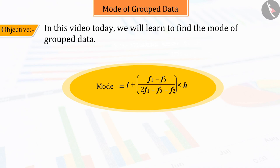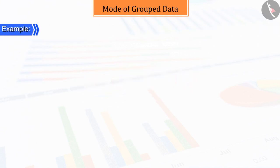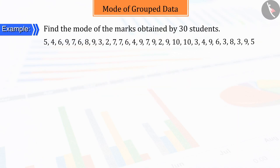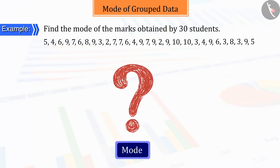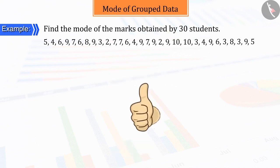Let's look at ungrouped data before understanding mode. We have the following figures of the marks obtained by 30 students. Can you tell the mode of these figures? That's correct.